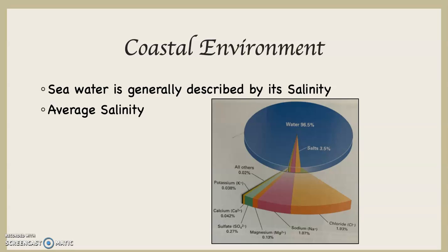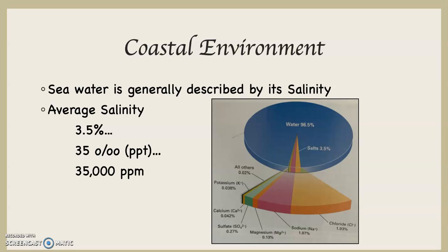Average salinity can be expressed in a variety of ways — remember this is an average across the entire global ocean, which covers 75% of the surface of our planet. We can express it as 3.5%. The most common way is 35 parts per thousand, written as 35‰. That means 35 parts per thousand, or PPT. It can also be expressed as 35,000 parts per million (PPM), but 35 parts per thousand is the most common.